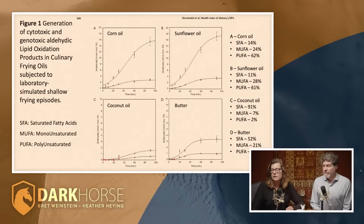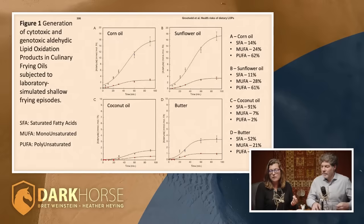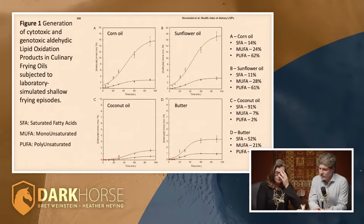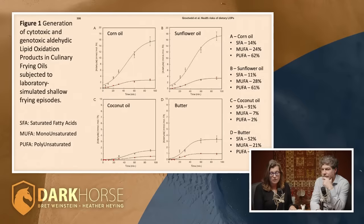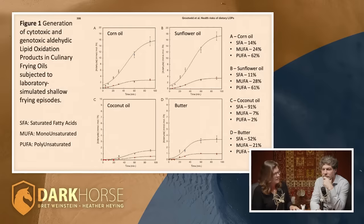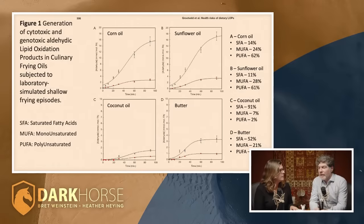Polyunsaturated fats in butter are only 3.5%, which could look very misleading. I was surprised by the coconut oil to butter comparison — I would have thought they were very similar, just as corn oil and sunflower oil are similar. But actually coconut oil has way higher saturated fatty acid content, and it generates far less cytotoxic and genotoxic lipid oxidation products when food is fried in it over these relatively short periods of time.